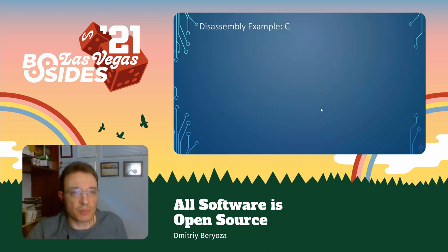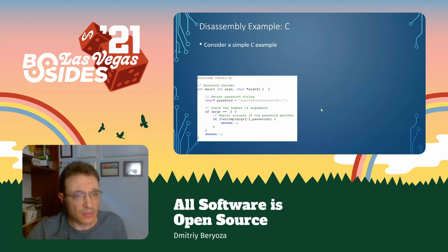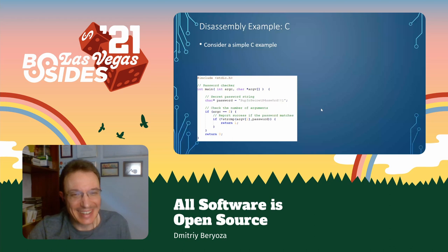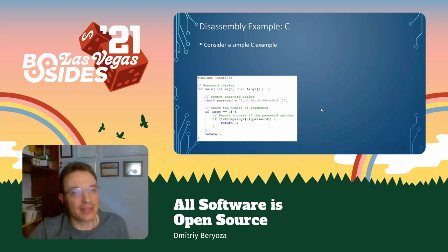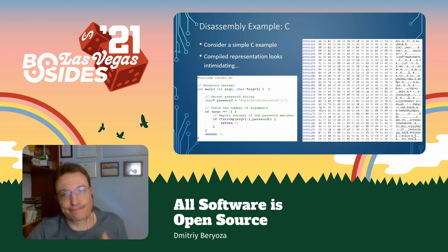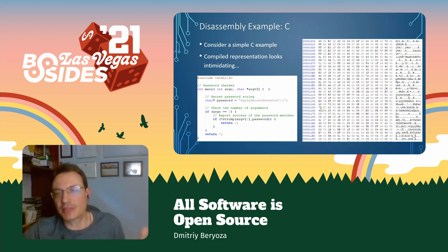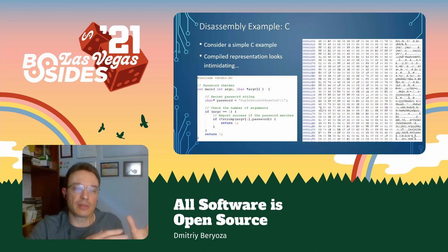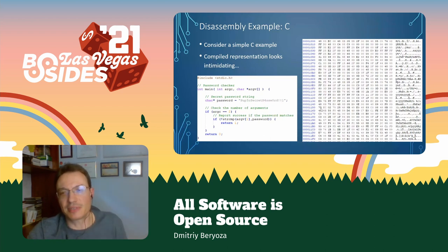Let's look at a small example. This is a tiny C application that just has an embedded password — which is a horrible way to program — and it just checks whether the password the user entered on the command line matches and exits. Pretty simple. If you compile it and open it in a binary editor, you'll see something that looks kind of intimidating. And that's totally understandable — I think that's what stops a lot of people from actually proceeding.